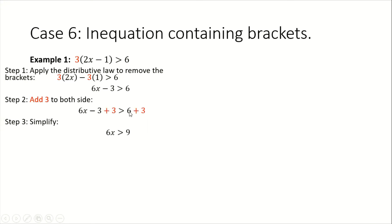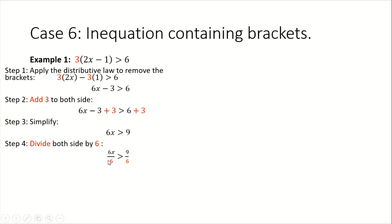As you can see here, 6 plus 3 gives us 9, and minus 3 plus 3 is 0, and 0 plus 6x gives us 6x. So at this stage we observe our inequation. We know that 6 is being used to multiply our variable, so in order to transfer this 6 to the other side we divide both sides by 6. We would state this as 6x all over 6 greater than 9 all over 6.